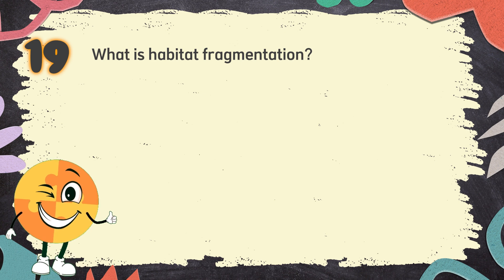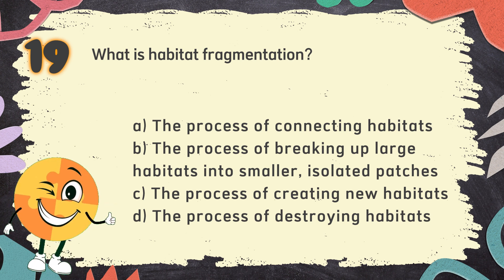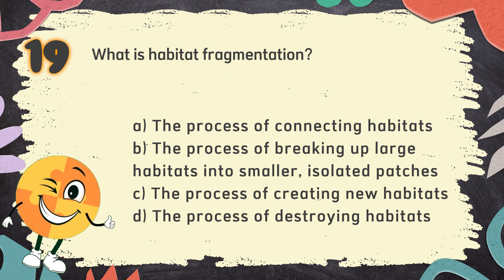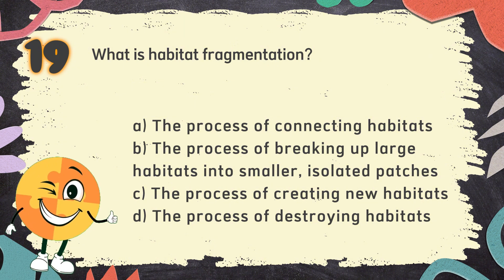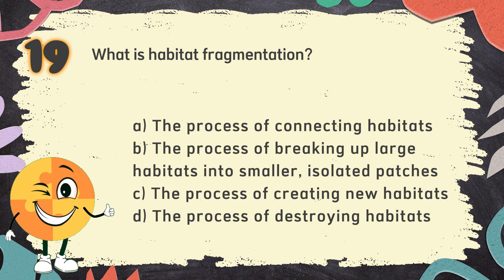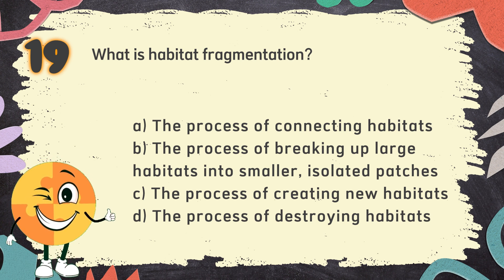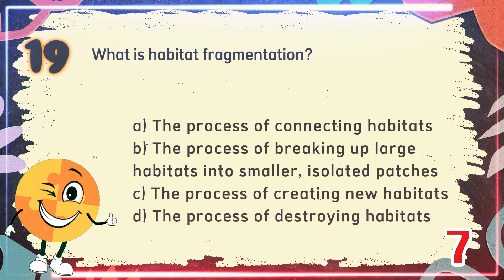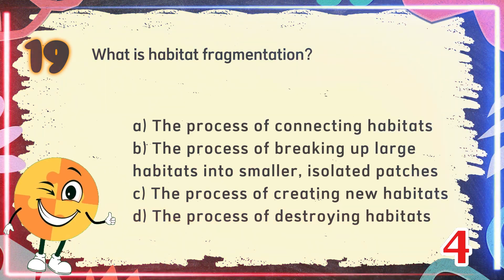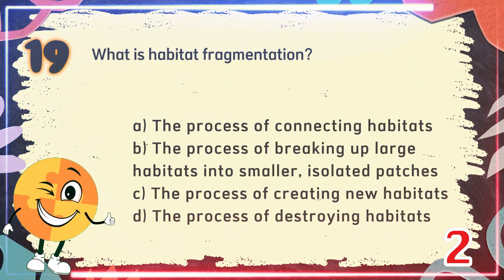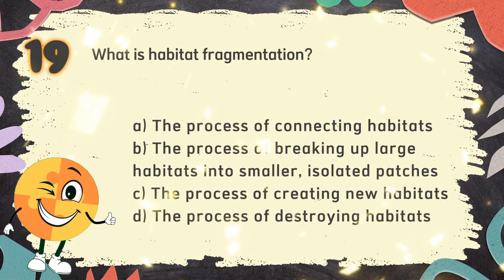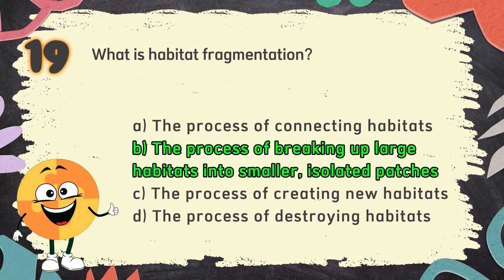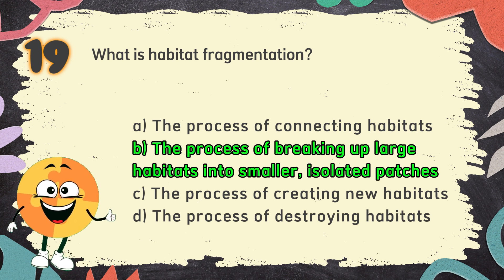Number 19. What is habitat fragmentation? The choices are A. The process of connecting habitats, B. The process of breaking up large habitats into smaller isolated patches, C. The process of creating new habitats, D. The process of destroying habitats. The correct answer is B. The process of breaking up large habitats into smaller isolated patches.